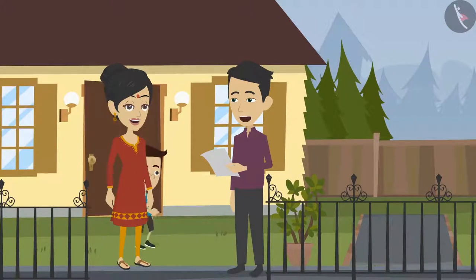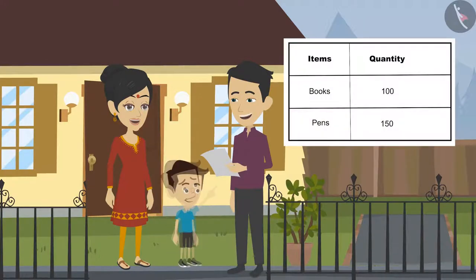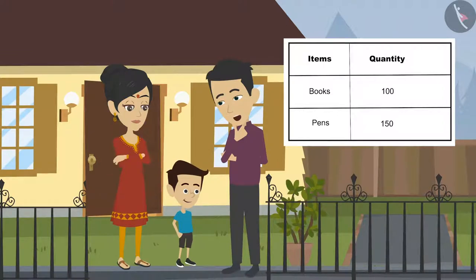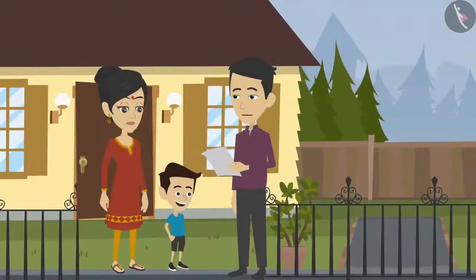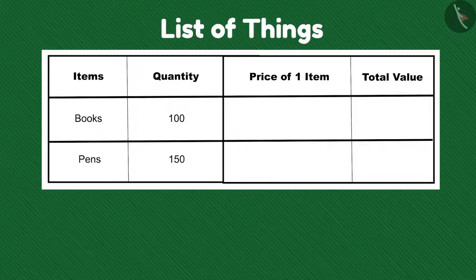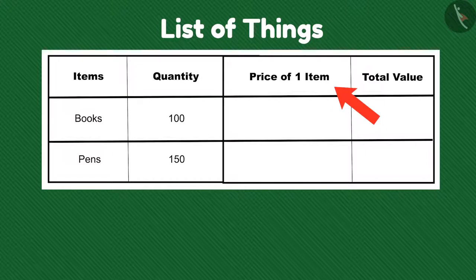Dad, how did you find out how much money is needed to start a stationary shop? Can you tell me? Son, before starting any work we need to make a list of things we need. Using that list we will be able to identify how much money is needed. For instance, I made this list — I have entered the number of items I need, but I still need to enter the amount, and then I will get to know how much money is required to buy the things.